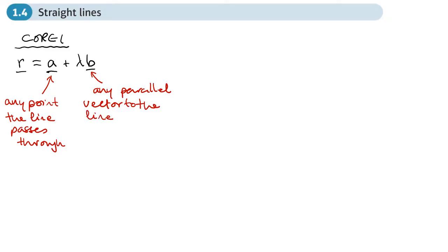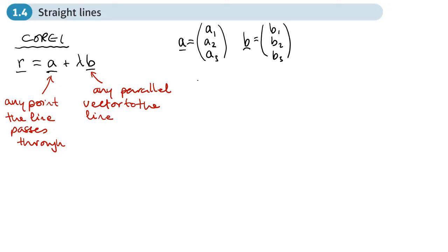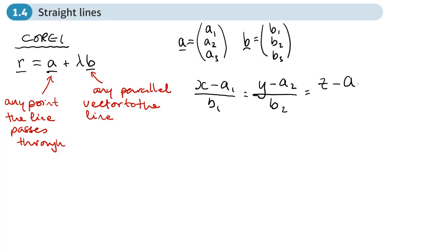If you put in different values of lambda — different scalars — you generate different coordinates. You'll also know that in Cartesian form, if we wrote vector a as (a1, a2, a3) and vector b as (b1, b2, b3), then the equation of a line is: x minus a1 over b1, equals y minus a2 over b2, equals z minus a3 over b3. So all of that was from Core 1.